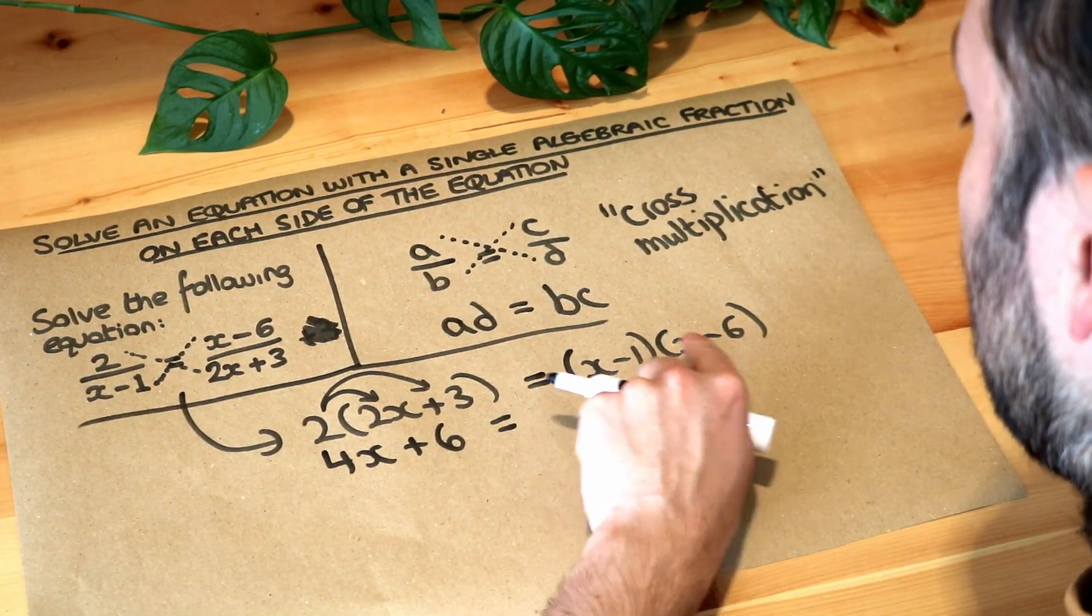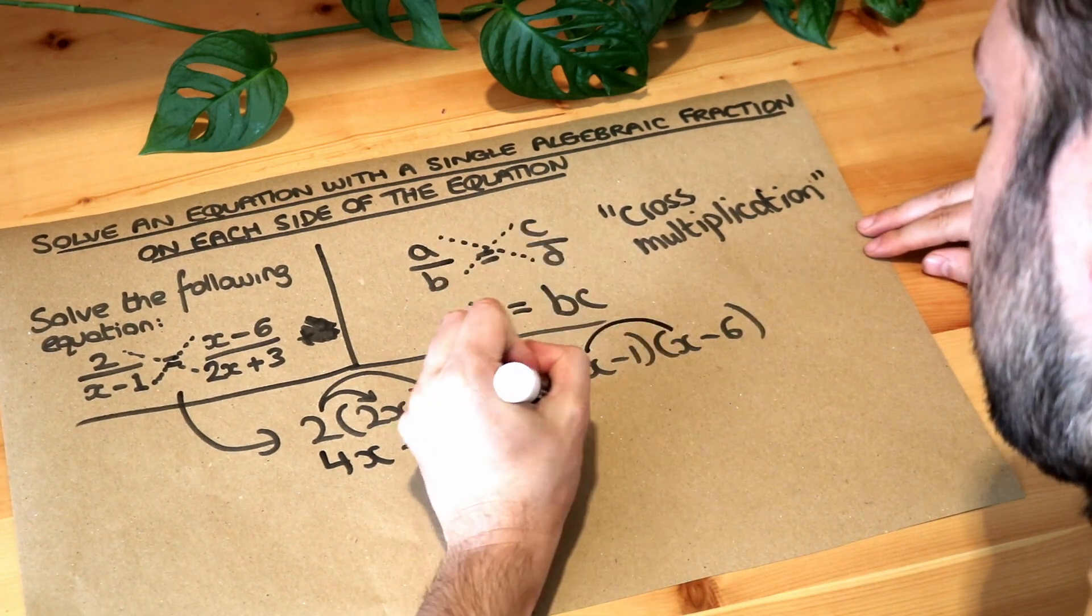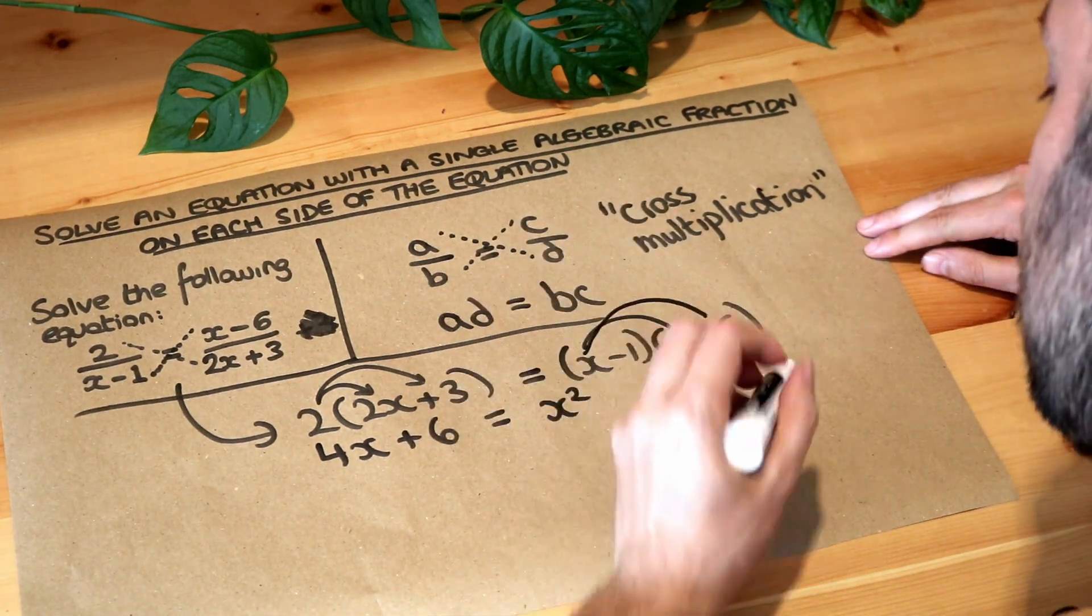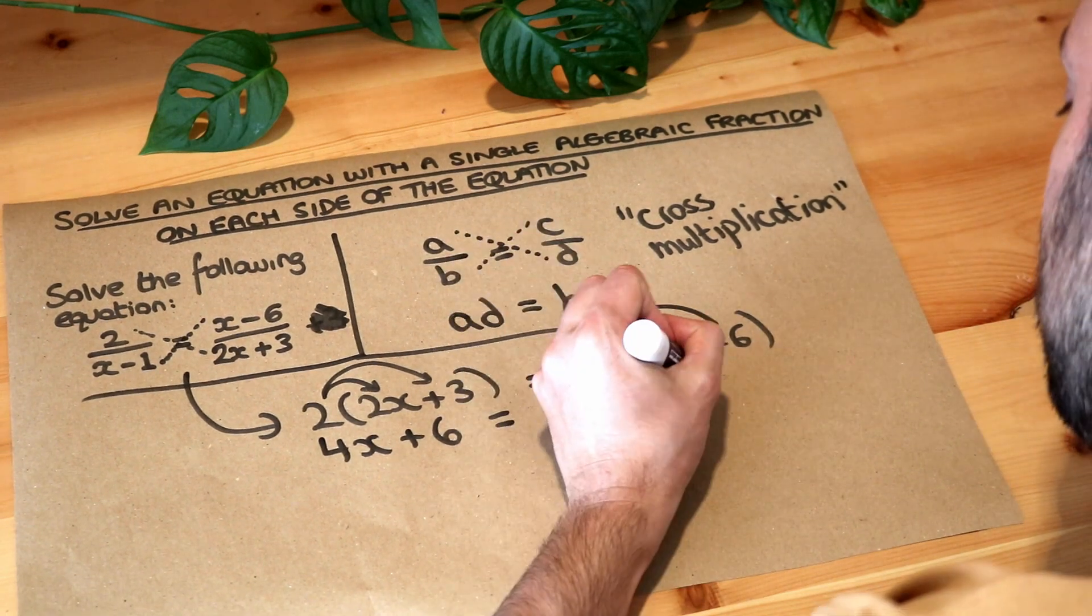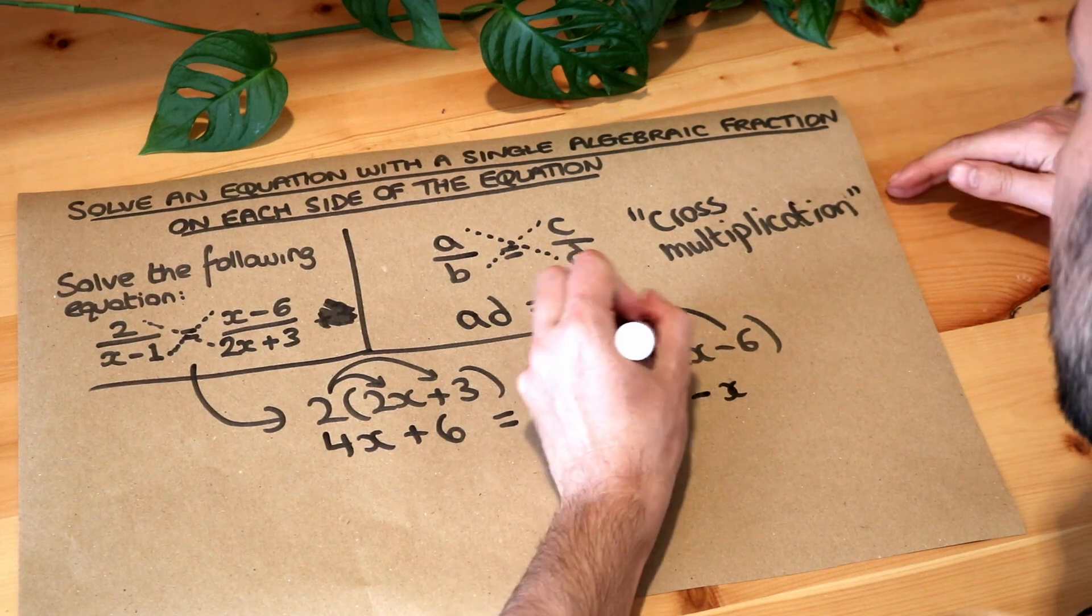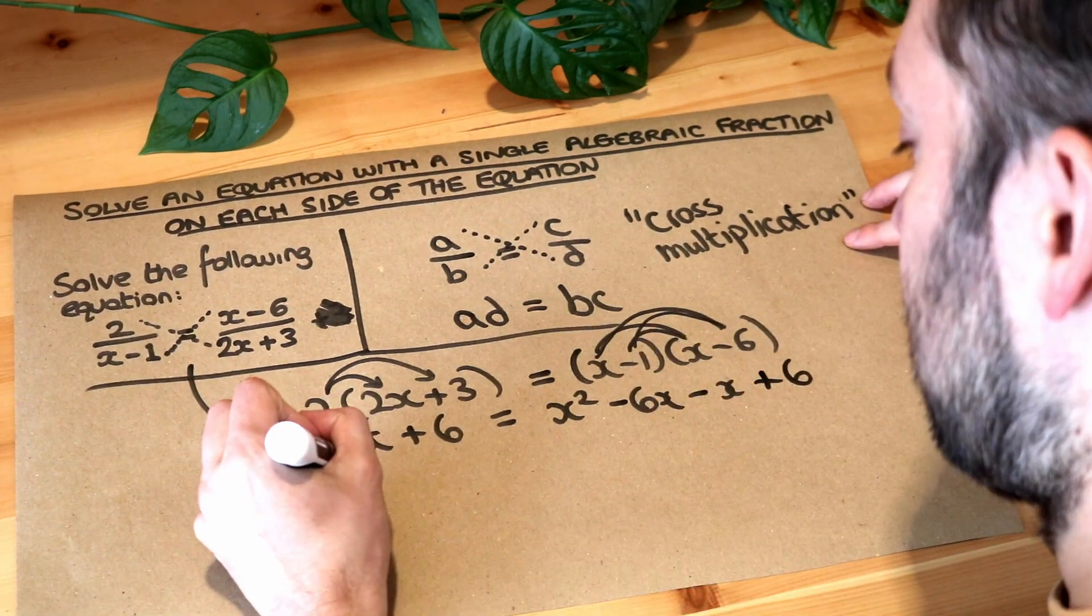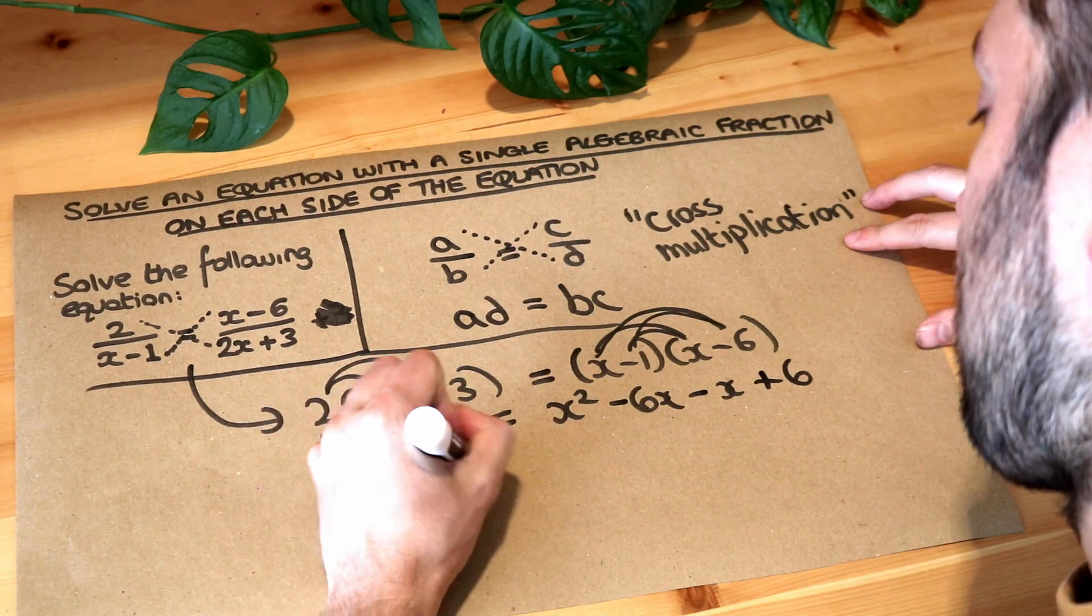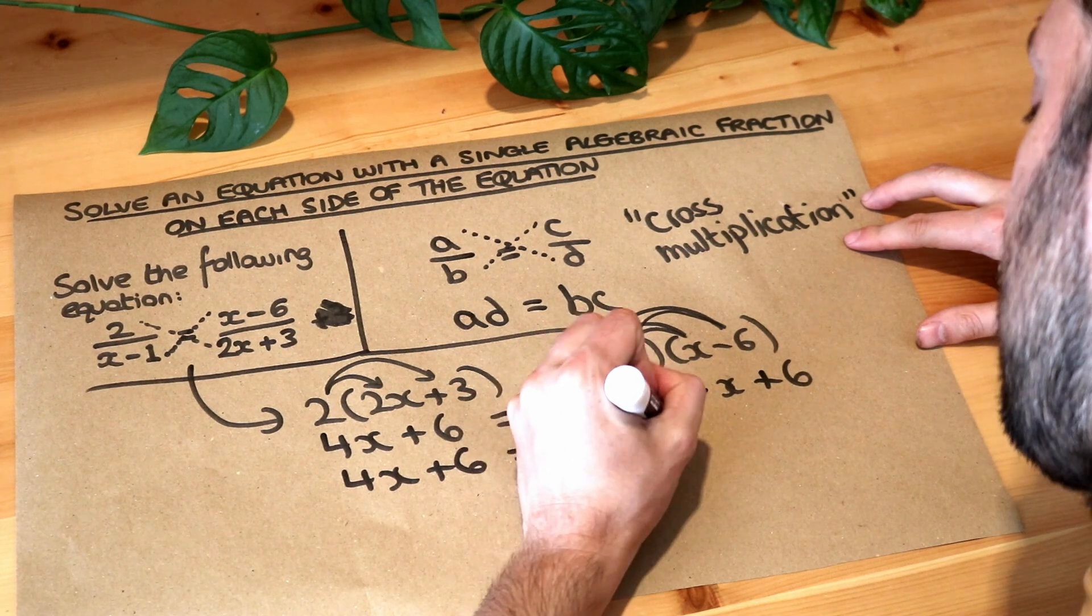And on the right hand side we've got two brackets here so we need to do each thing in the first bracket multiplied by each thing in the second. So we've got x times x which is x squared, the x times minus 6 which is minus 6x, then we've got minus 1 times x which is minus x, and we've got minus 1 times minus 6 is plus 6. So if I just tidy that up a bit you've got x squared, that's going to be minus 7x plus 6.